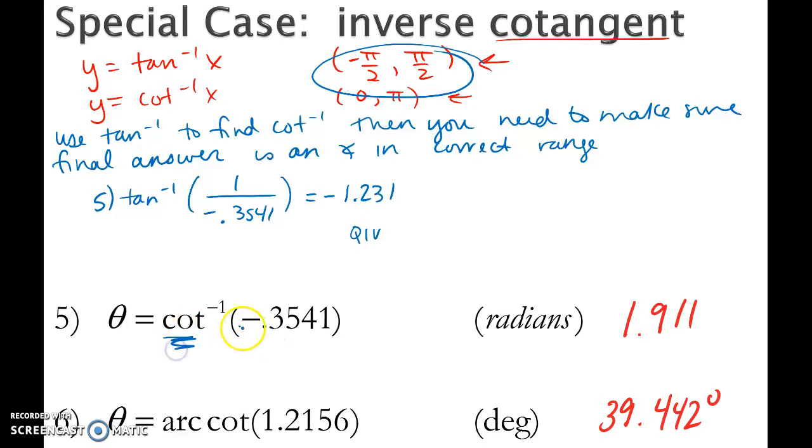However, it's a cotangent of a negative ratio. Therefore, it should be in quadrant 2. So to fix that problem, I need to add pi. And after adding pi, I get the correct answer of 1.911, which is in quadrant 2.